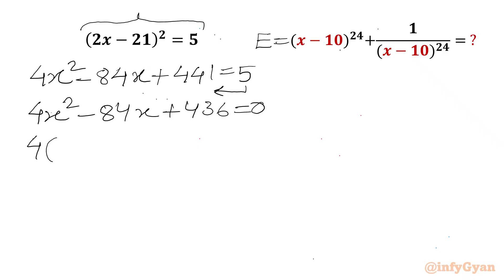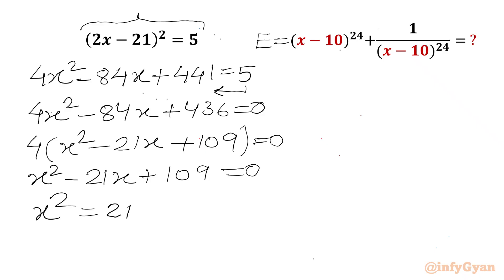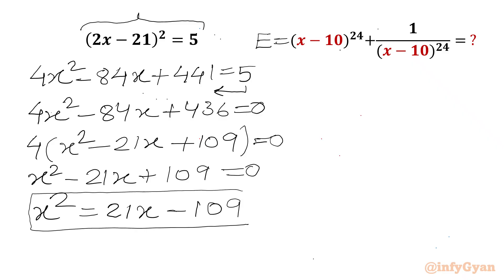We can take 4 common out to get x² - 21x + 109 = 0. Therefore x² = 21x - 109. I will call this equation number 1.